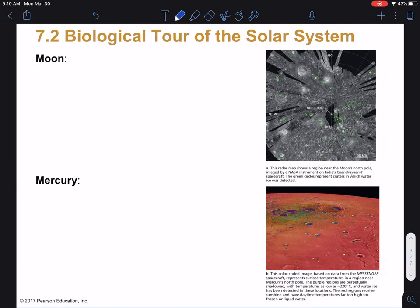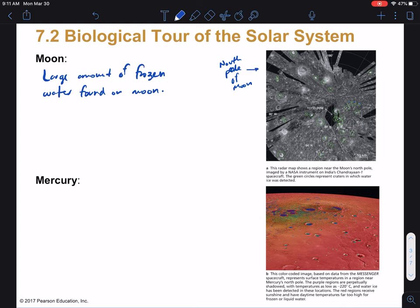All right, so moving on. Looking at some of the other bodies in the solar system, starting our tour here, we have the Moon. So this picture here to the right is the north pole of the Moon. And what it's trying to show you is a bunch of places where water has been identified. The little green circles here—you can see them. There's little green circles on that image. All of those craters, water ice has been identified. So it looks like the Moon has large amounts of frozen water, and it's mostly in craters and in the polar regions.